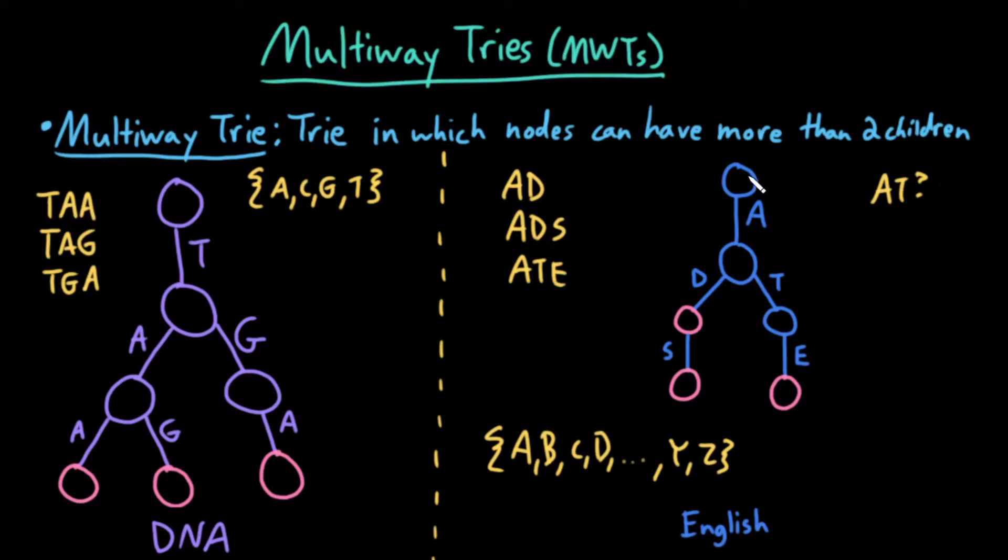But when you follow the path A, T, you do not end up at a word node. Because this is not a word node, this does not exist in my multi-way trie.